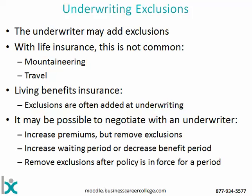On the living benefits side, it's very common to add exclusions at the time of underwriting. This is especially true with disability insurance, and you'll sometimes find it with critical illness as well. Now it may be possible to negotiate with the underwriter — we see this in particular with exclusions. You might say to the underwriter you don't want that exclusion and ask if they could increase premiums instead. Sometimes underwriters will be willing to do that. With a disability policy they might go for an increased waiting period or reduced benefit period in exchange for removing an exclusion. And sometimes you may be able to get a policy re-underwritten after it has been in force for a period of time, and thereby remove an exclusion.